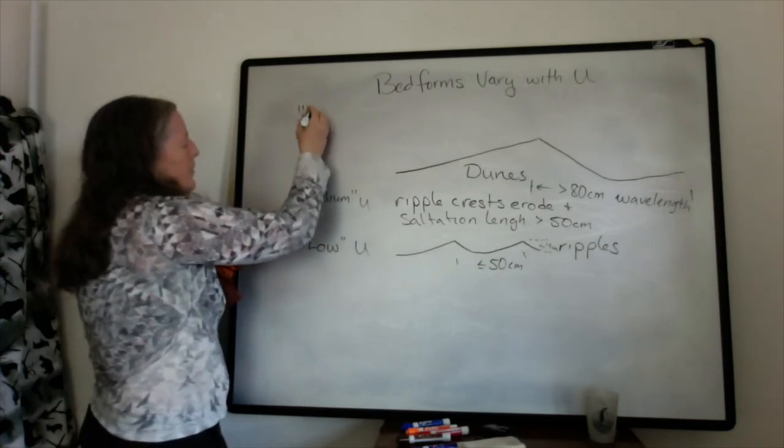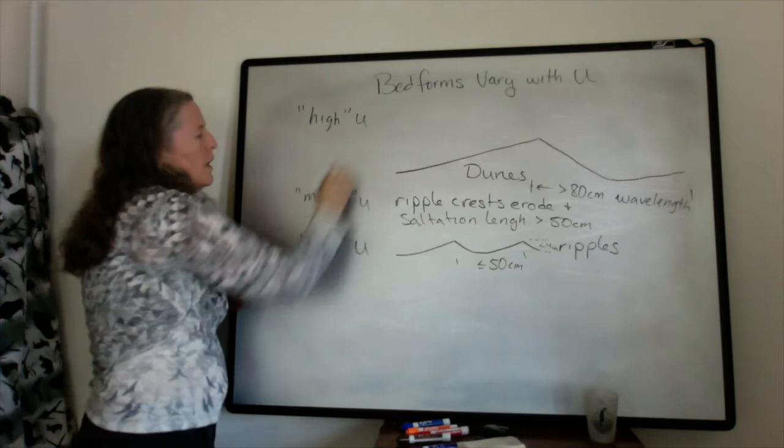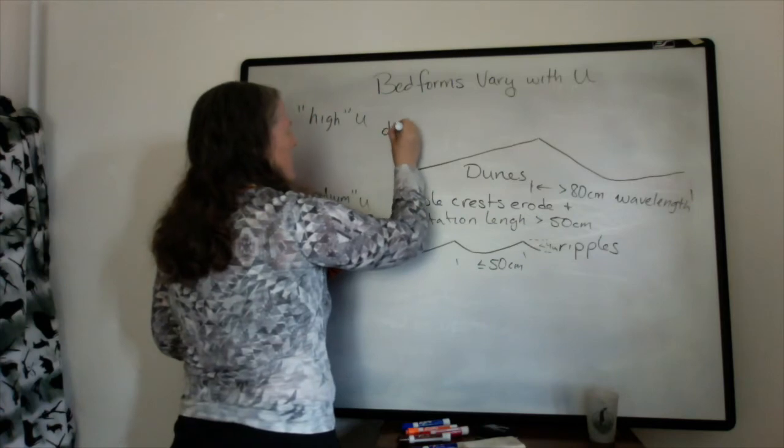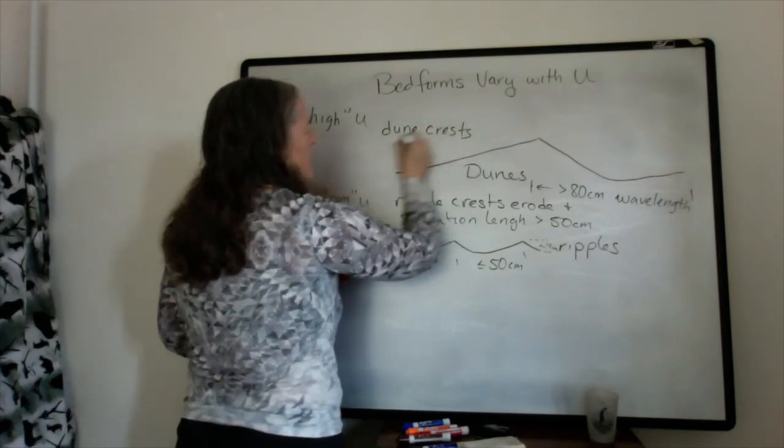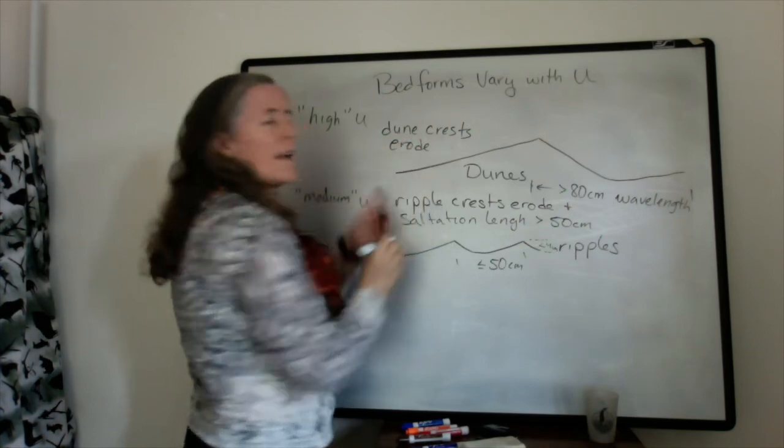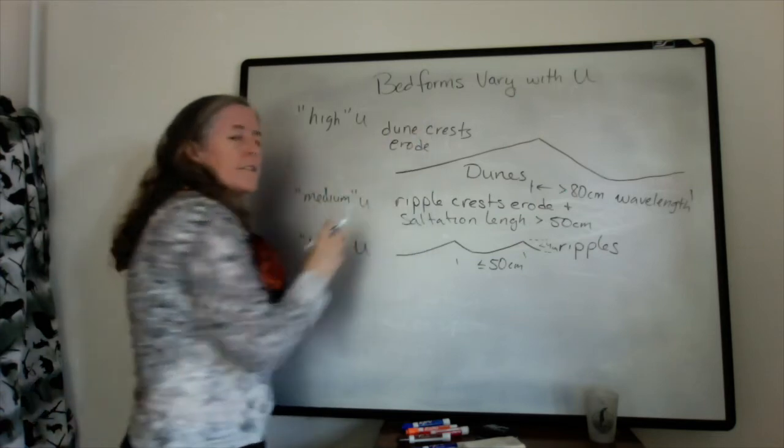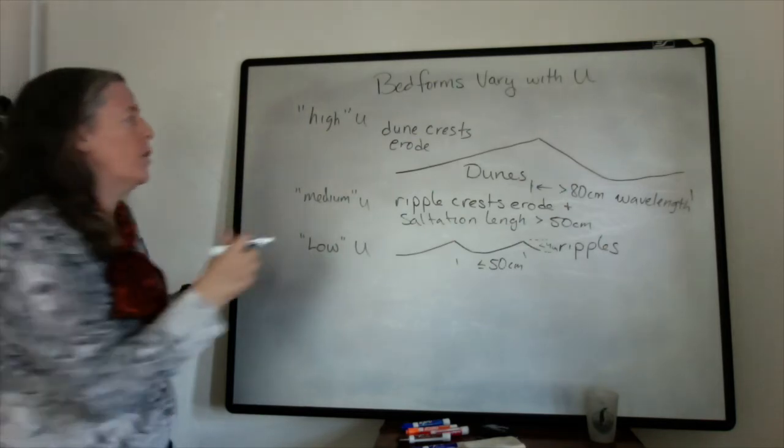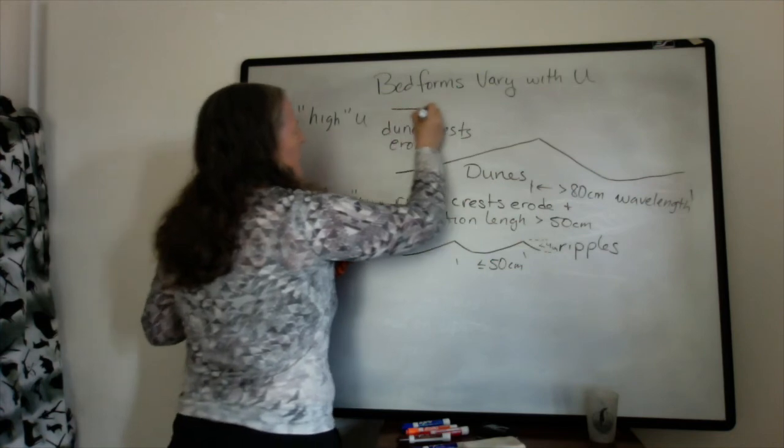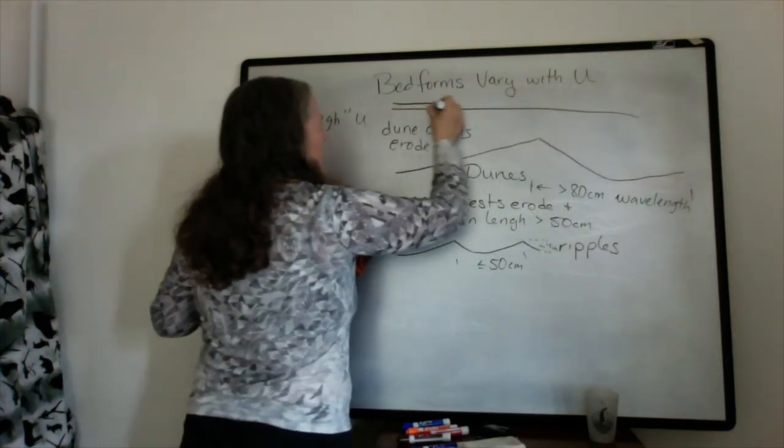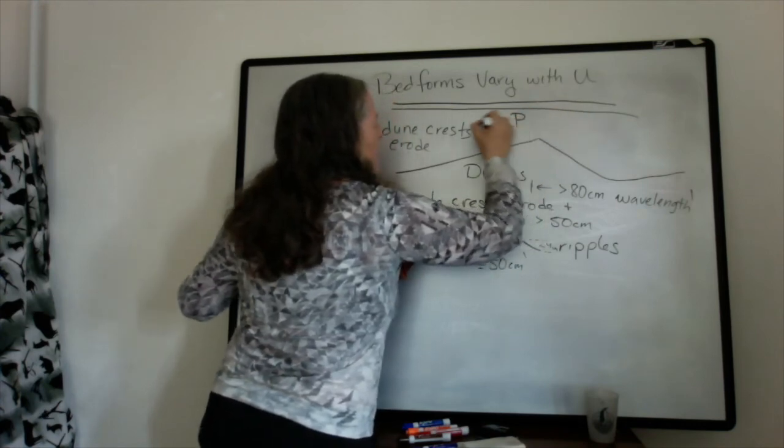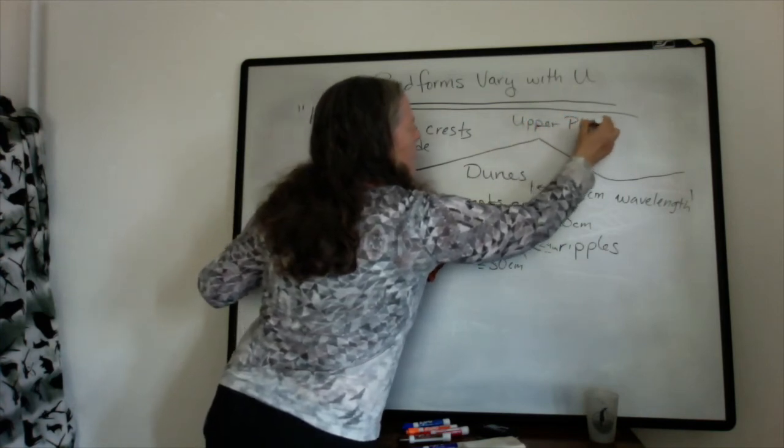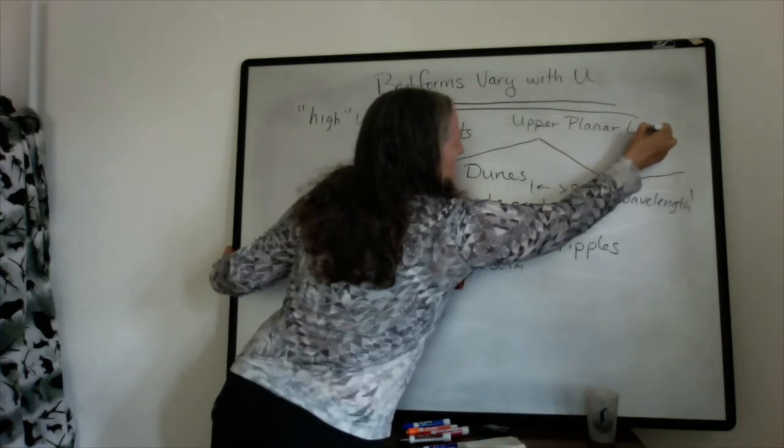So then when you get to a high flow speed, the dune crests start eroding away. And that tends to flatten out the dunes. And the grains are just moving downstream so fast that they're not really quite saltating anymore. There's not very much upward motion. And you end up with a flat bed. You lose your bed forms here and you end up with planar lamination. We usually call it upper planar lamination. And that's because it's at the high flow speed.